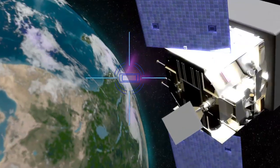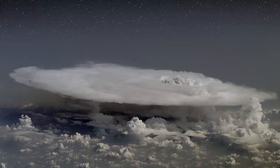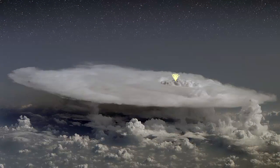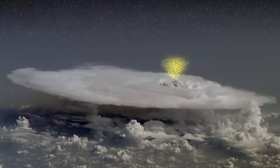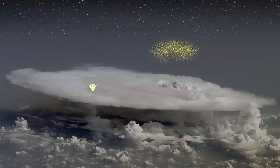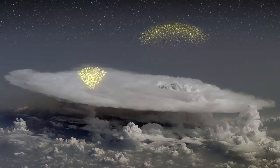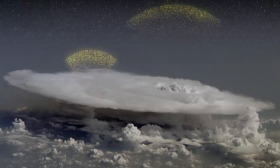Scientists believe that the TGF process begins in a thunderstorm's intense electrical field. Electrons within this field become accelerated upward. Above the storm, where the air is thin, the electrons can ramp up to speeds nearly as fast as the speed of light.